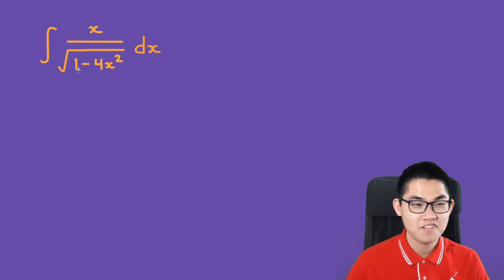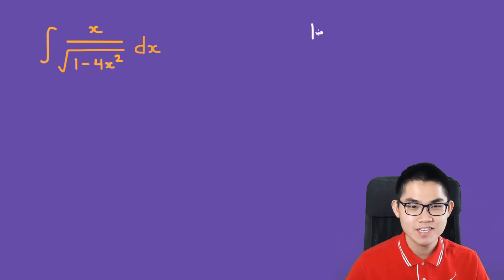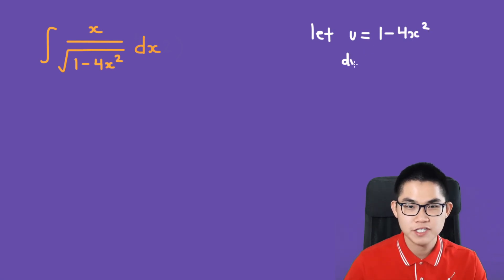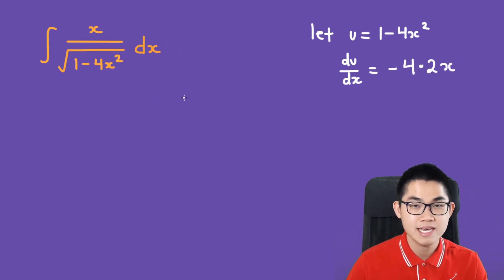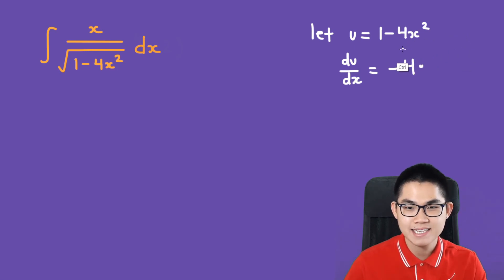The integral of x over the square root of 1 minus 4x squared dx. This can be solved with u-substitution. Let u equal 1 minus 4x to the power of 2, and we differentiate it, so du over dx is equal to negative 4 times 2 times x, that's going to be negative 8x.